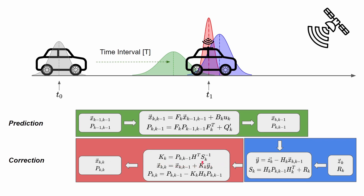If the Kalman gain values are zero, we are trusting completely the predicted state. If the Kalman gain tends to be one, then we trust completely the measurement and apply the full correction.